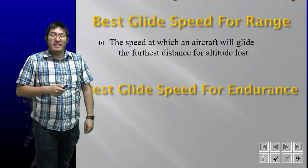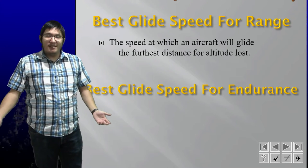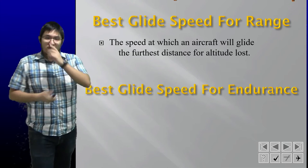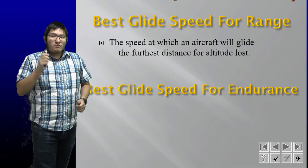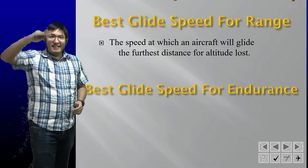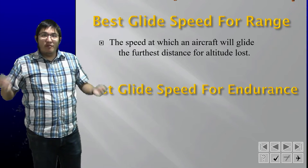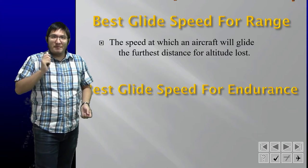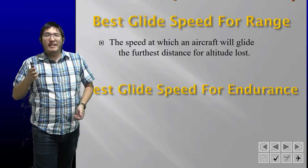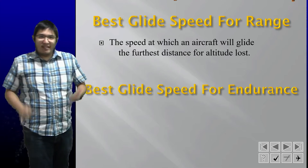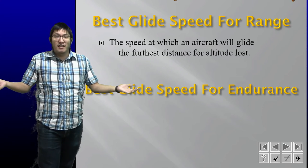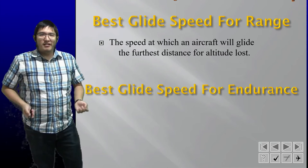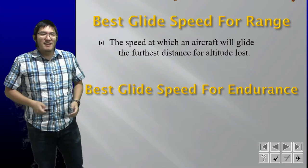Best glide speed for range — also known as best L over D or just best glide speed — is the speed at which the aircraft will glide the furthest distance with the least altitude loss. You're generating the most lift with the least drag. This is the speed you want to fly in an engine failure, to maximize your distance and give you more options.